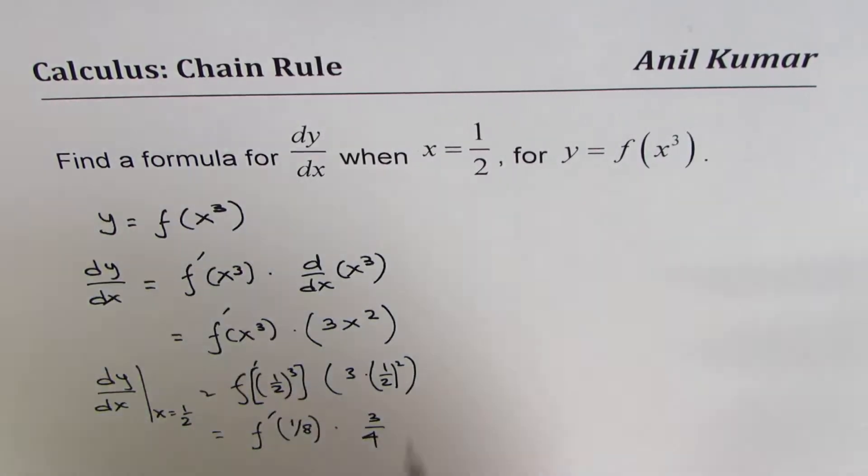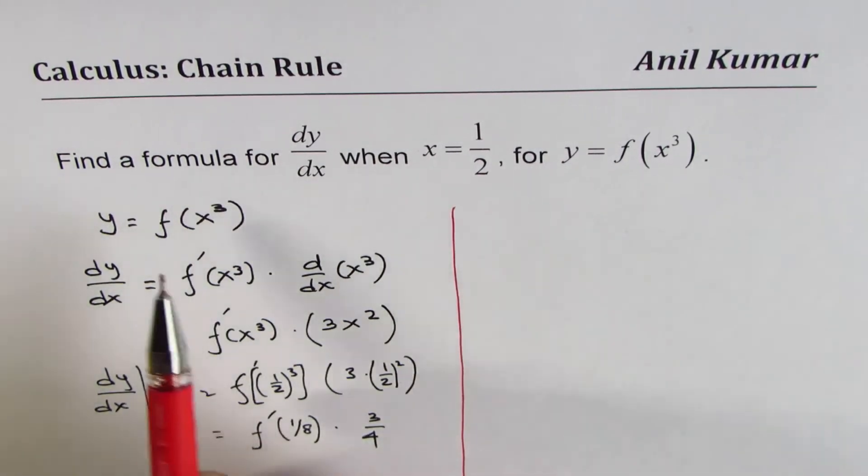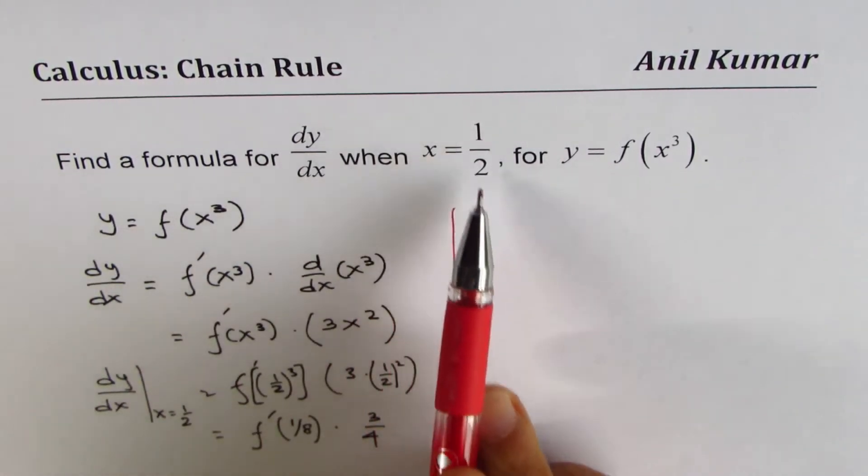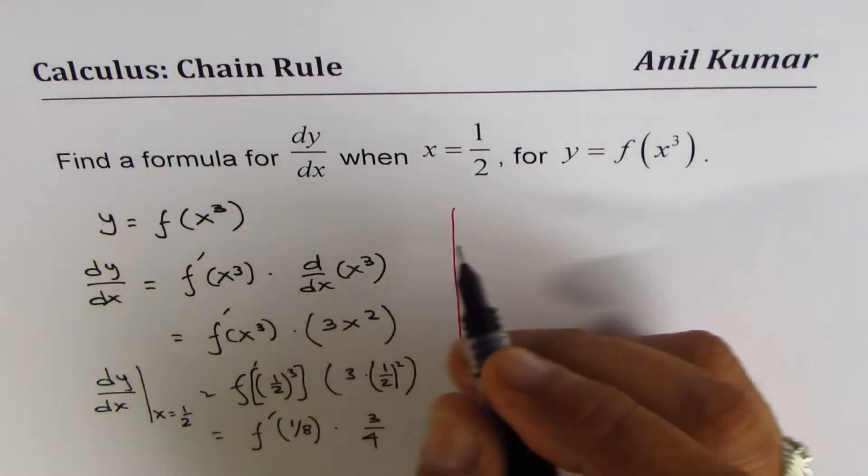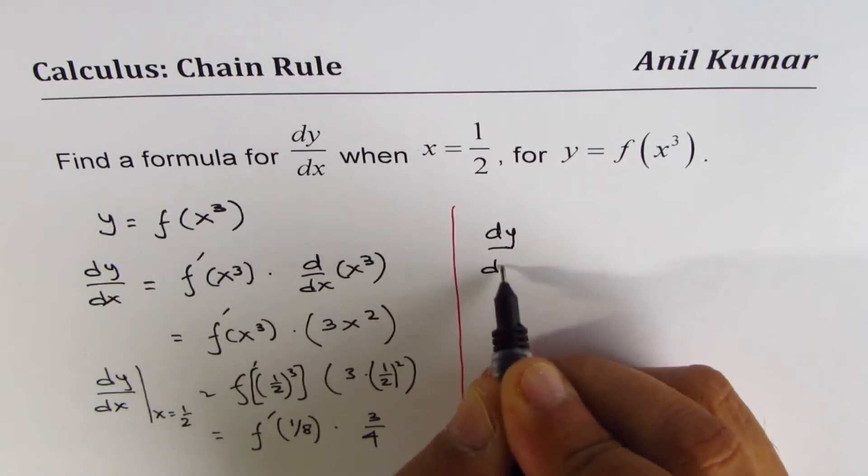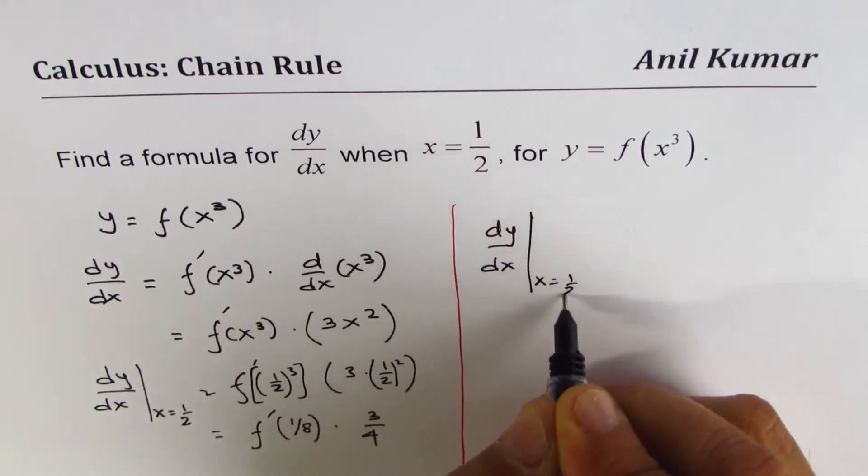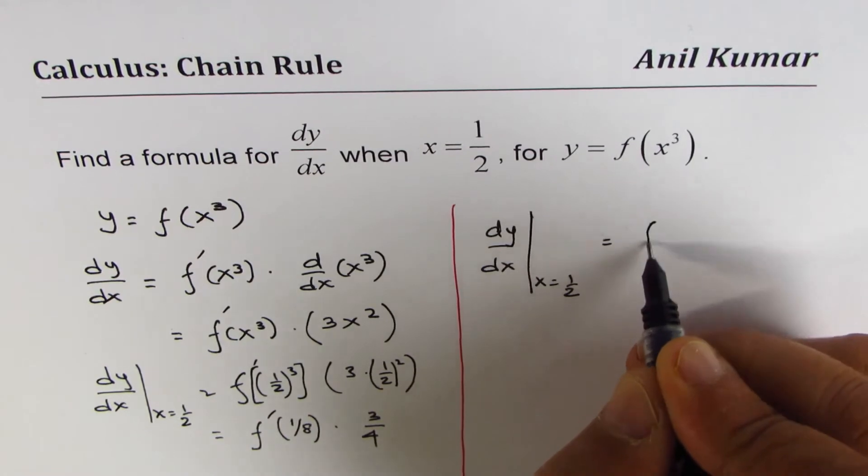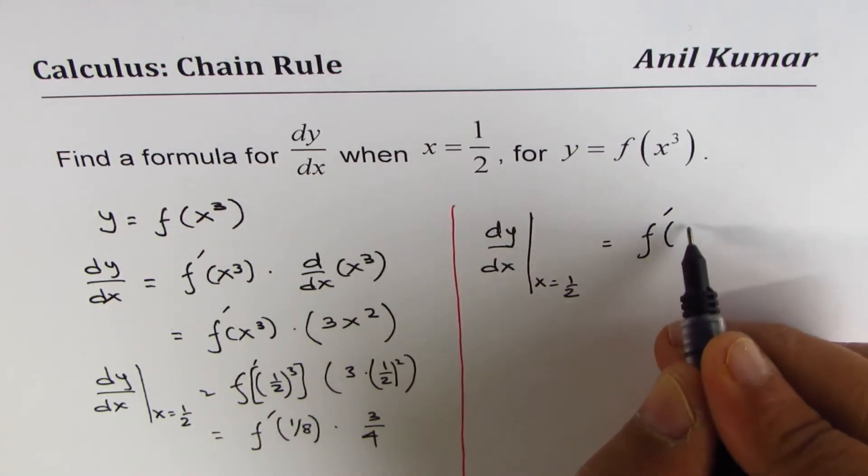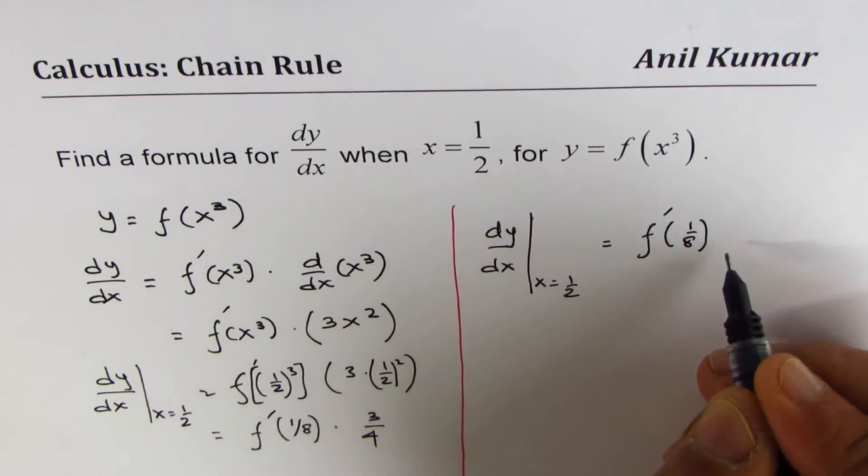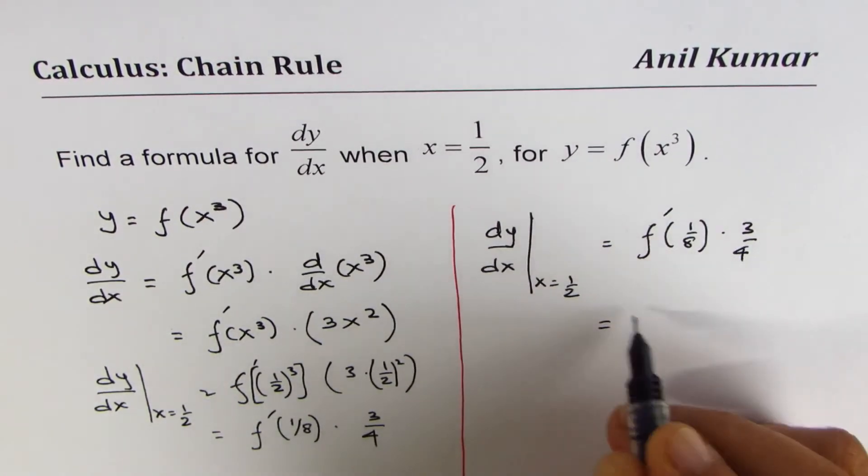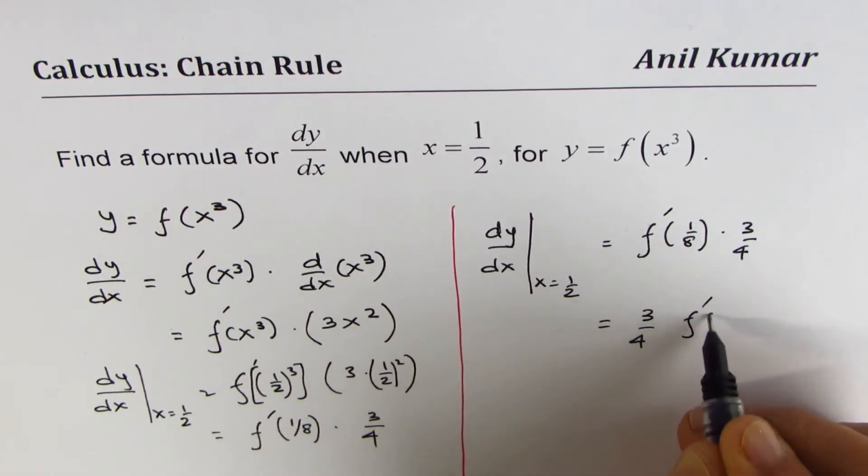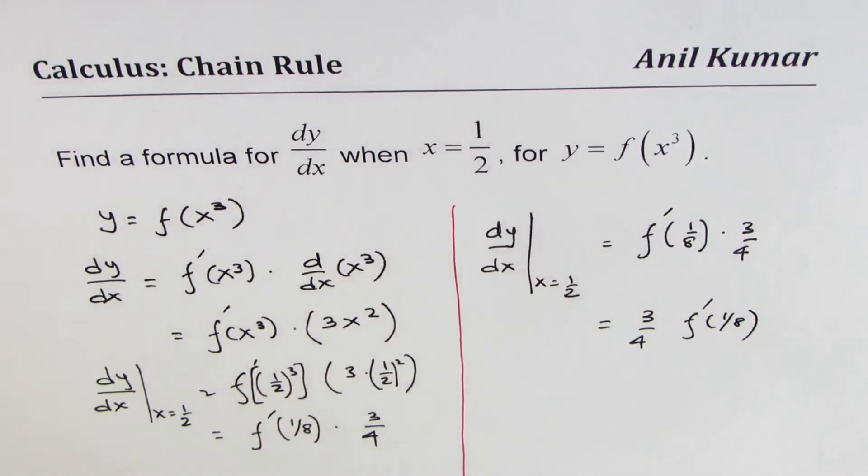So that is what we get. The derivative dy/dx, we can write here as: the formula at x equals 1/2 will be equal to the derivative of this function at 1/8 times 3/4. Or better to write 3/4 first, then the derivative at 1/8. So that becomes the formula when x equals 1/2.